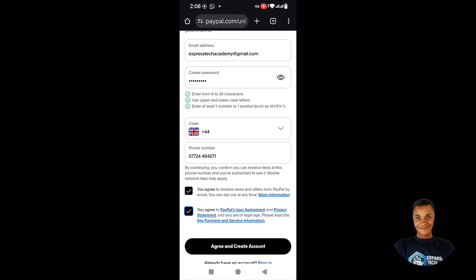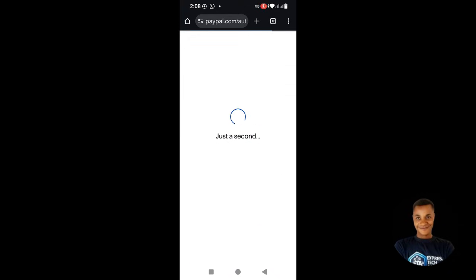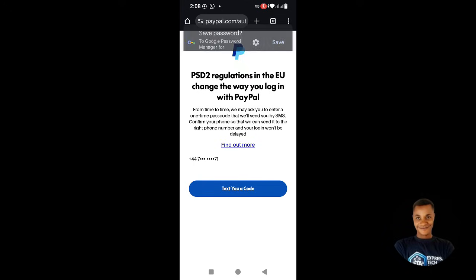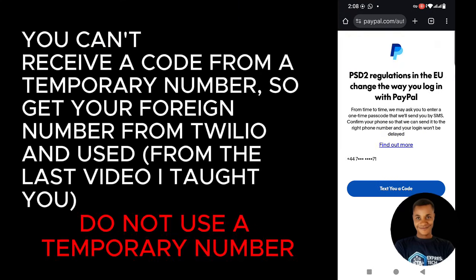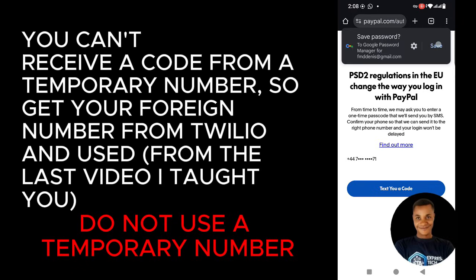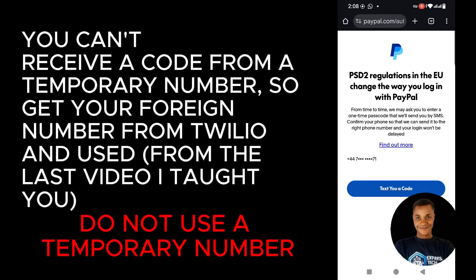Since the number is entered, I click 'I Agree' and then click 'Create Account'. PayPal's PSD2 regulation in the UK means they will send a code to the number you used to create the PayPal account. Once you are able to get that code and give it to them, your PayPal account is going to be created for you completely. Remember: once you put the phone number and give them the code, your PayPal account will be created.